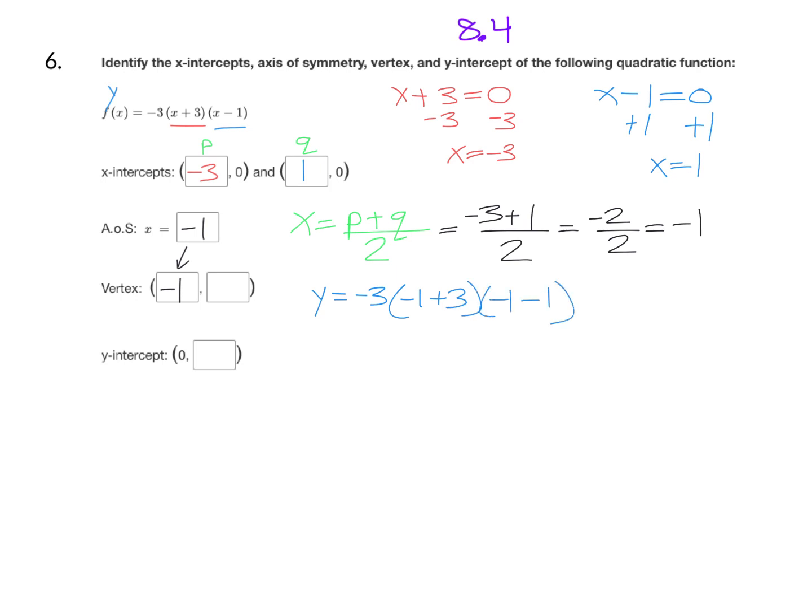And then simplify inside the parentheses first. That's what we do with order of operations. Negative one plus three is two, and negative one minus one is negative two. And you're going to see when you do intercept form, these two numbers are always going to be the same. Just one of them will be positive, and one of them will be negative. So that's a good little thing to check.